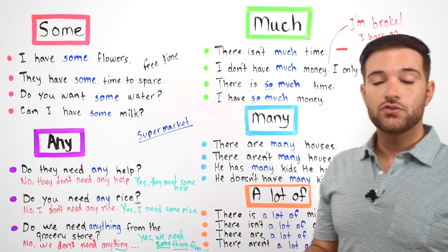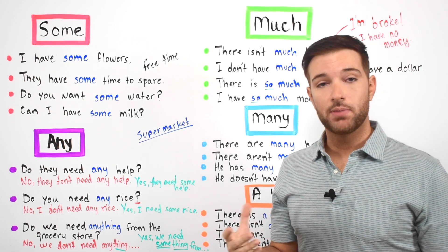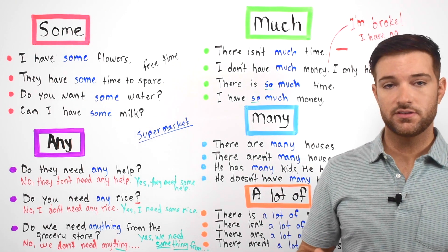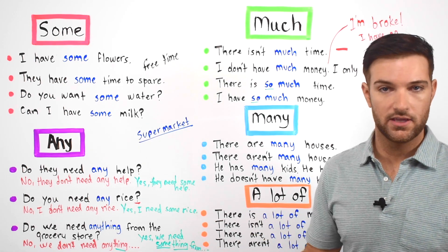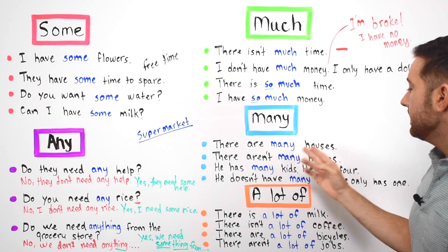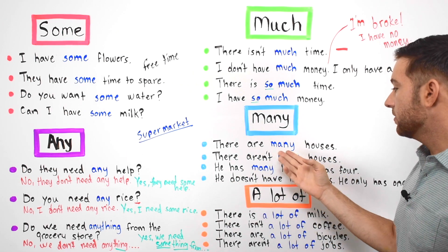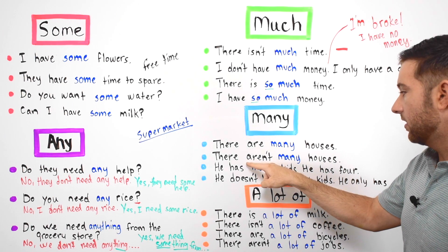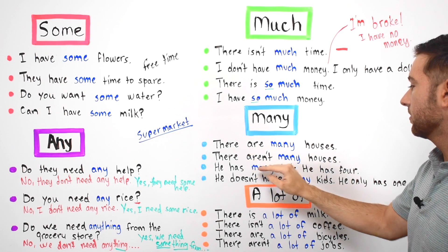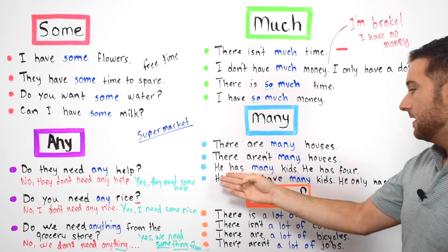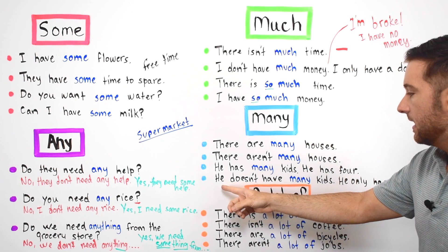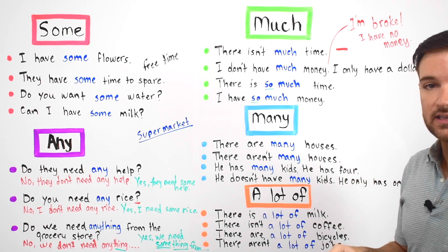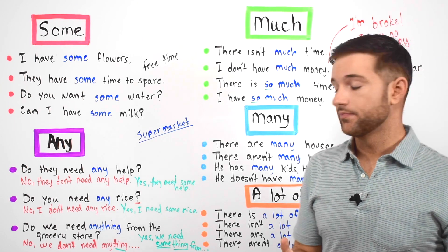Next we have the word 'many.' 'Many' is used with countable nouns in both positive and negative statements. For example: 'There are many houses' — there could be ten or twenty, quite a few. Or: 'There aren't many houses.' You can also say 'He has many kids — he has four,' or 'He doesn't have many kids — he has one.' So 'many' works with both positive and negative statements.